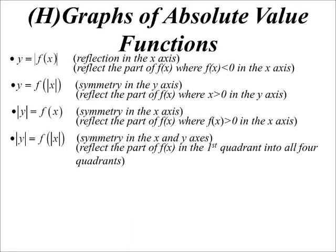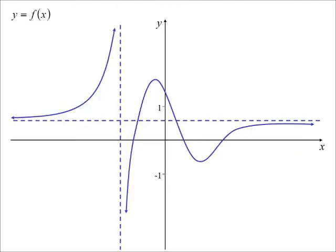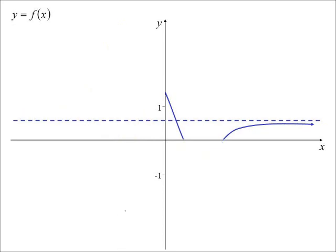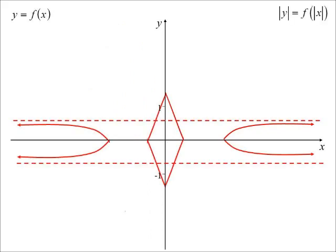Let's try the next one: |y| = f(|x|). Now we're only substituting in positive numbers, and our answers — where the graph exists — will be plus or minus. So it's going to have symmetry in both axes. Whatever is in the first quadrant gets reflected into all four quadrants. Looking at a random graph, whatever's in the first quadrant reflects into all four — that's |y| = f(|x|).